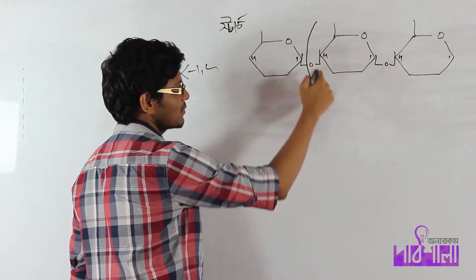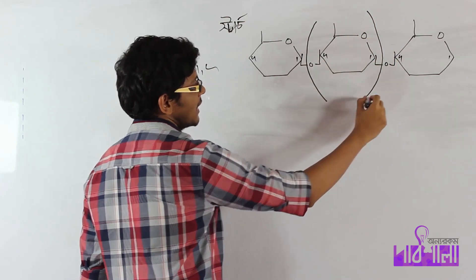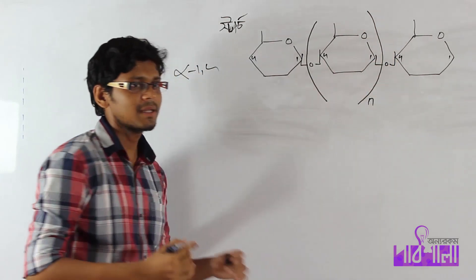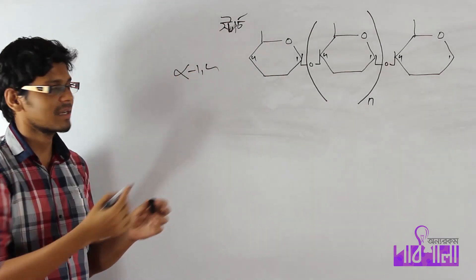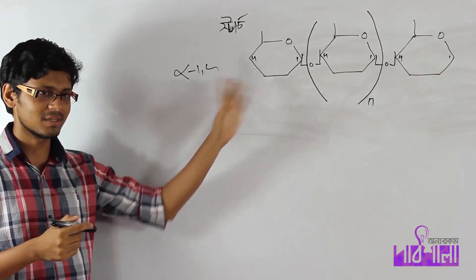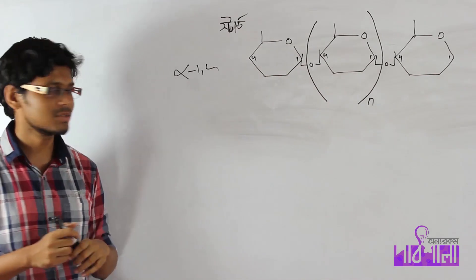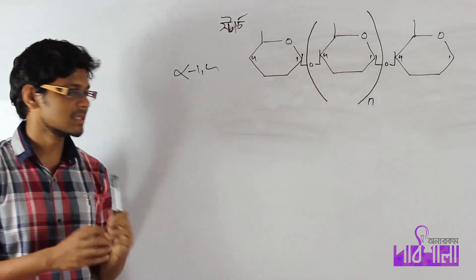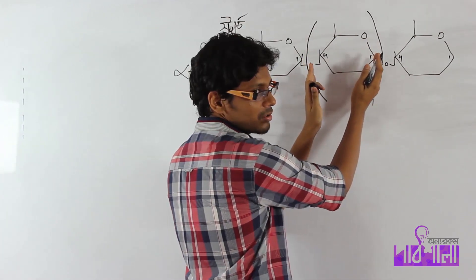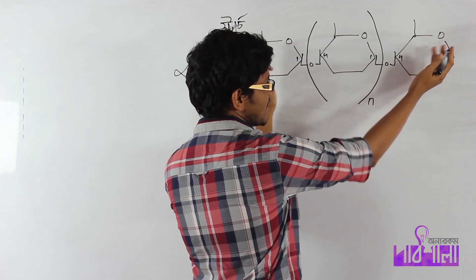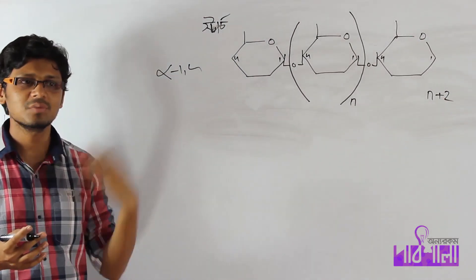If we talk about polysaccharide with glycosidic bonds, and if the number of glucose units is n, then the number of glycosidic bonds is n minus 1. This structure is what we call amylose with alpha-1,4 bonds. So if glucose is n, the glycosidic bonds are n-1.